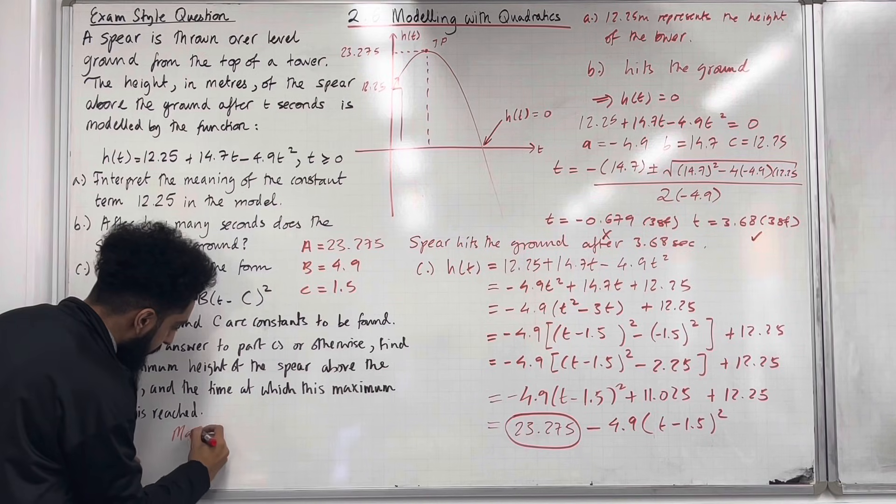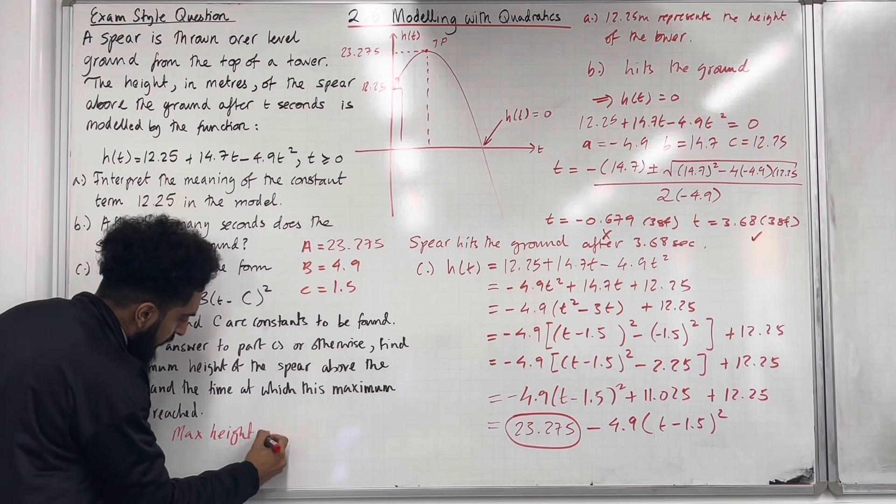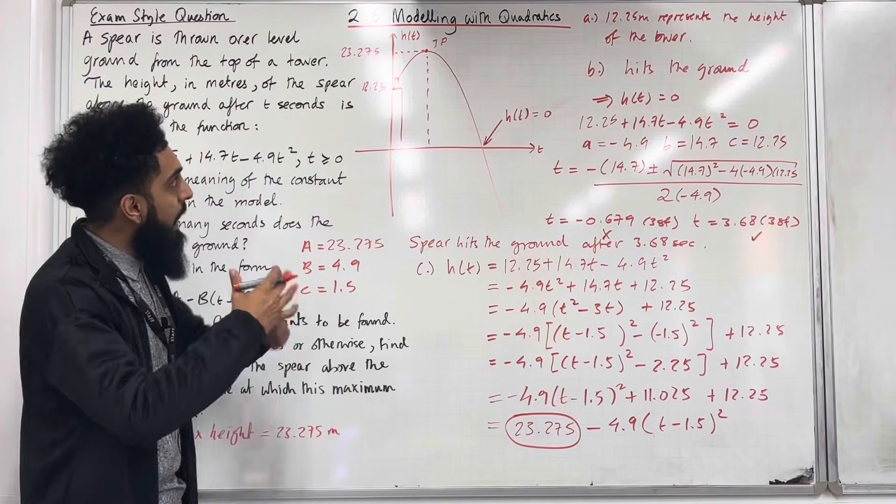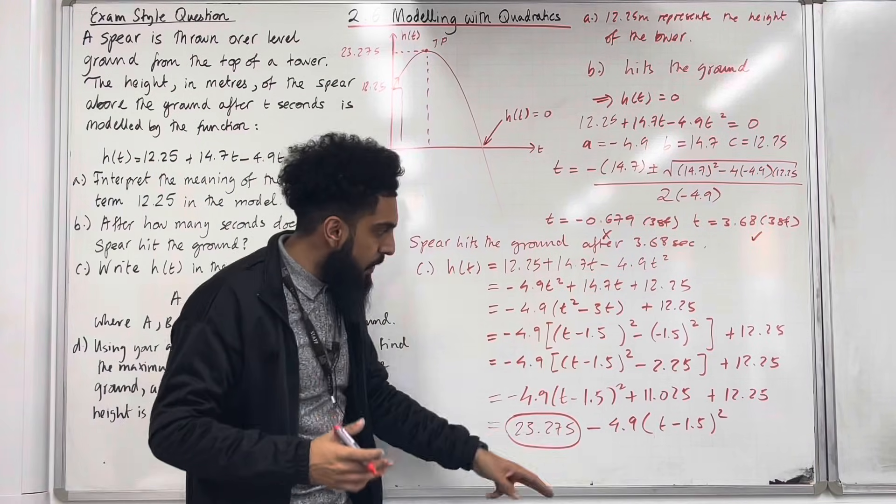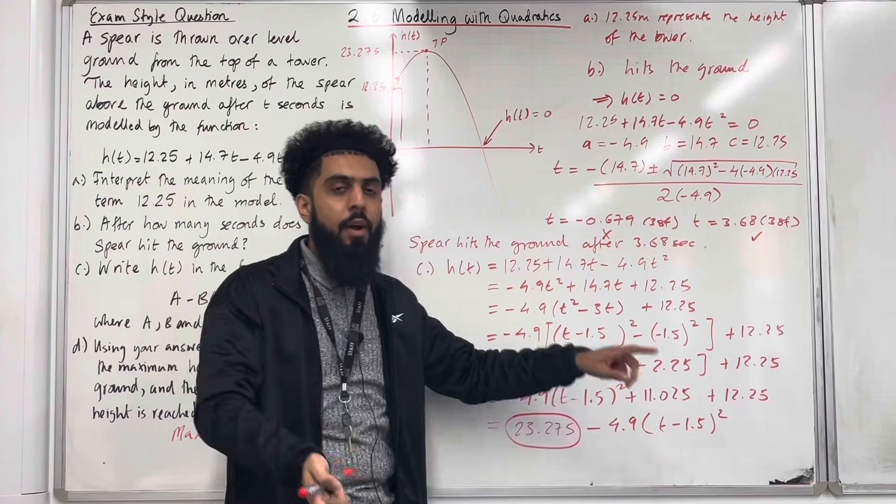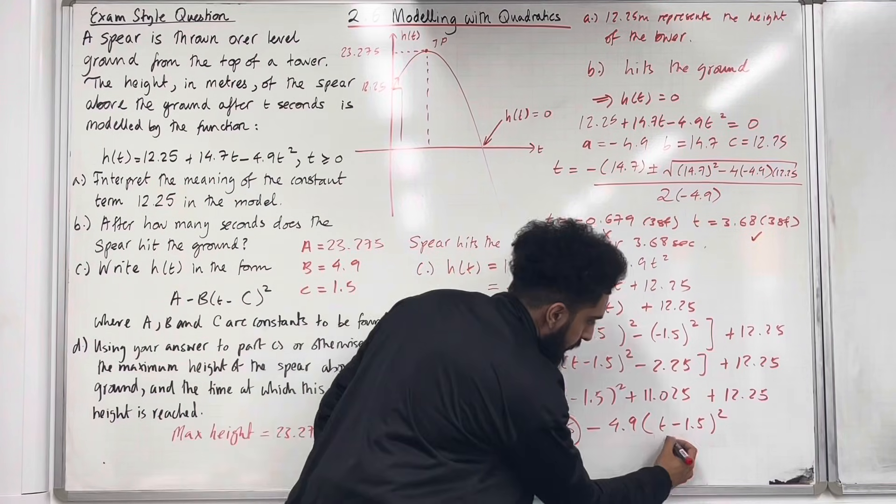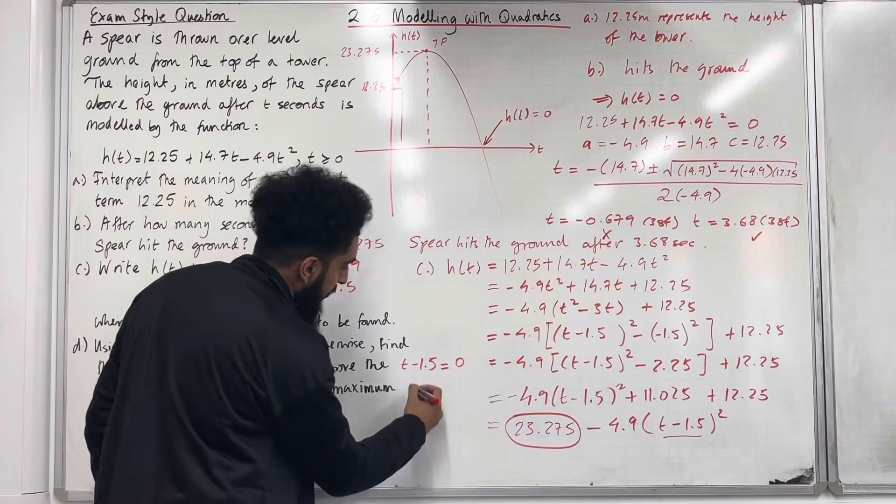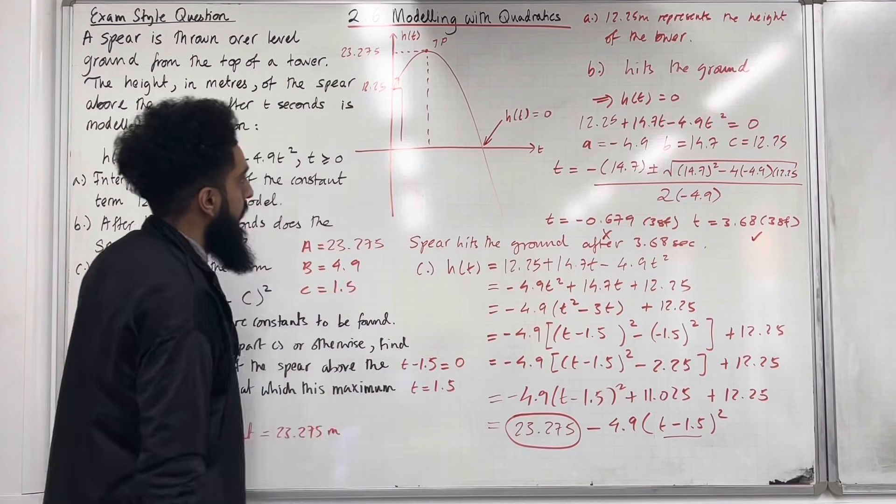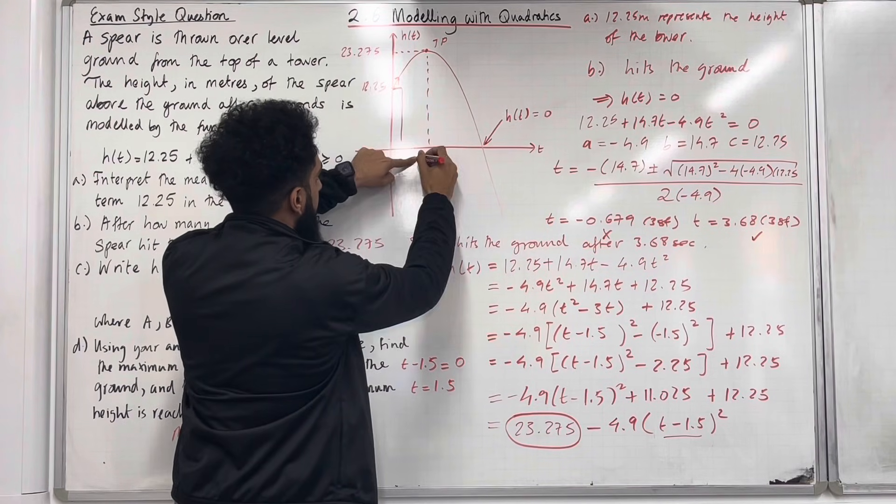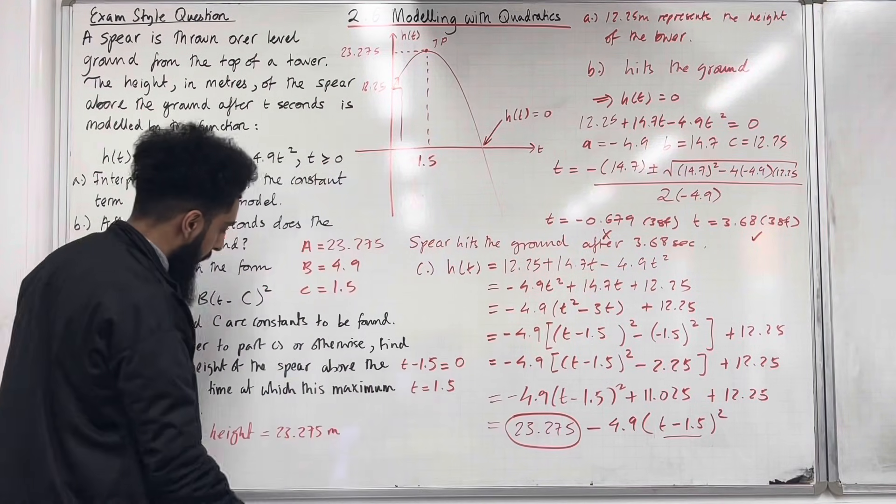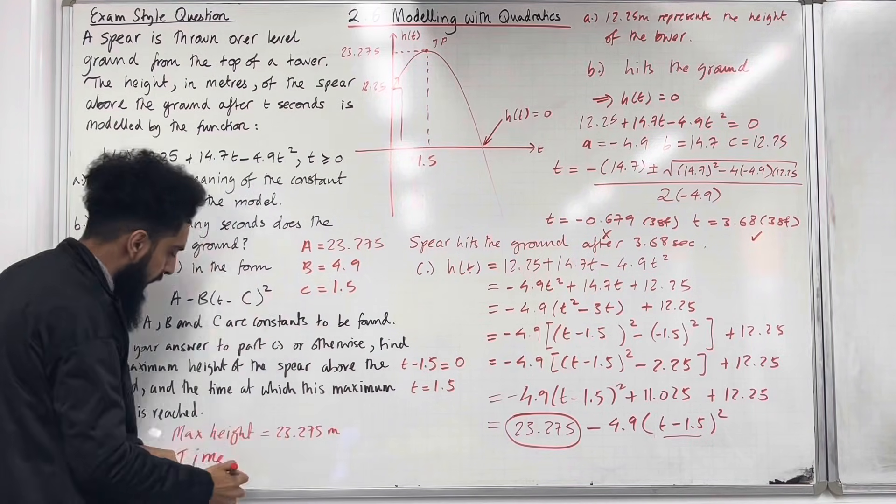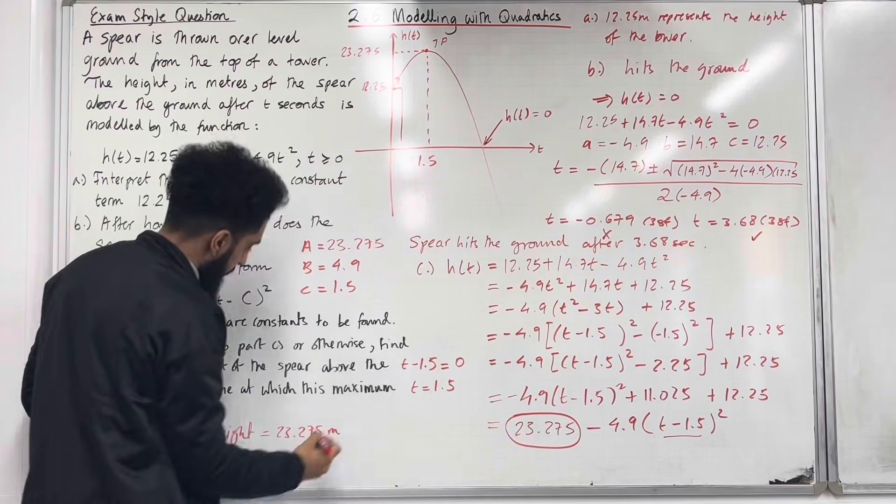Now to work out the time at which this maximum occurs, what I need to do is whatever I've got inside the bracket, I set it equal to 0 and then I solve. So I've got t - 1.5 and I set that equal to 0. This gives me t = 1.5. So the time at which this maximum occurs is 1.5 seconds. So the time at which the maximum height 23.275 meters is achieved is therefore 1.5 seconds. That there completes part D and the overall question.